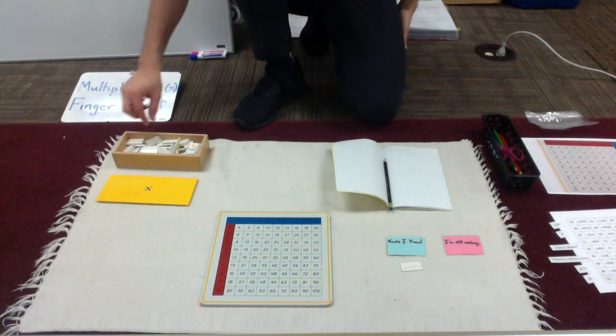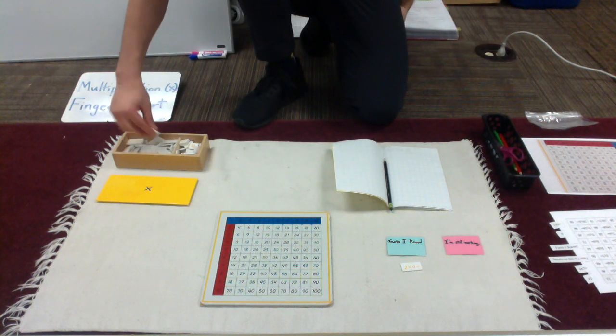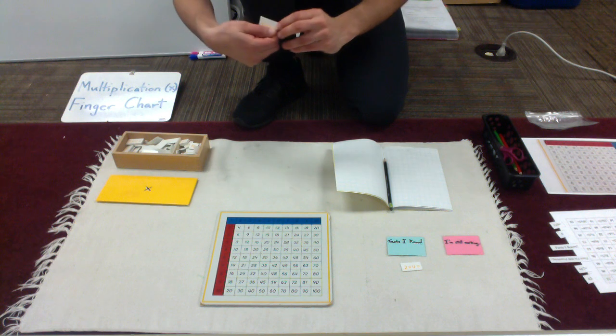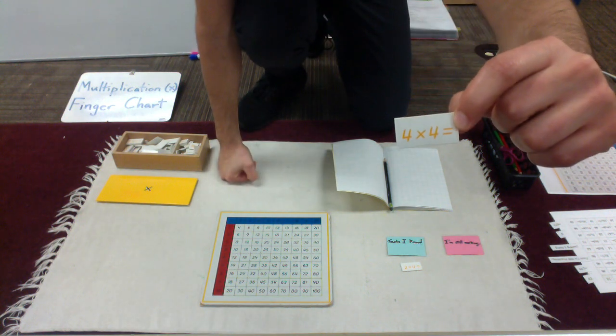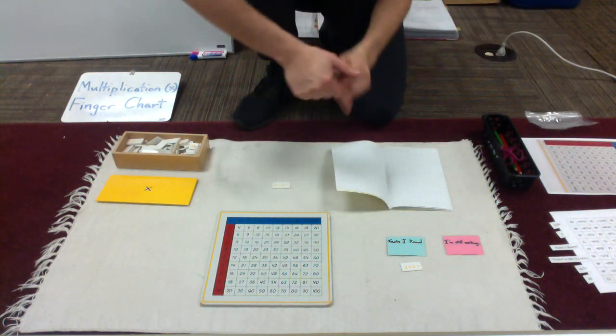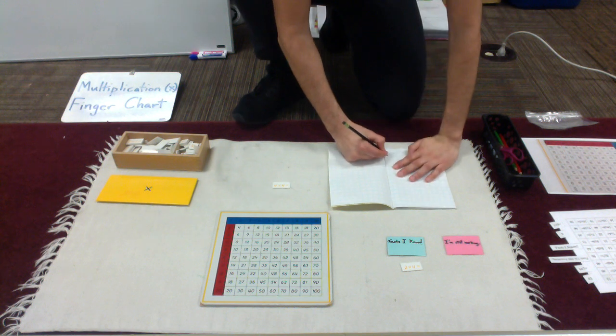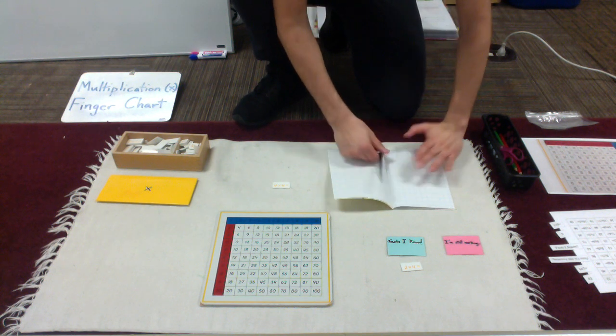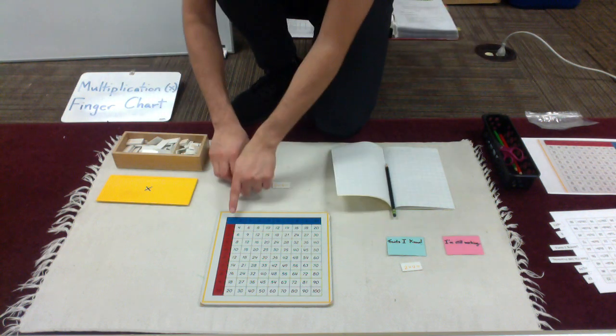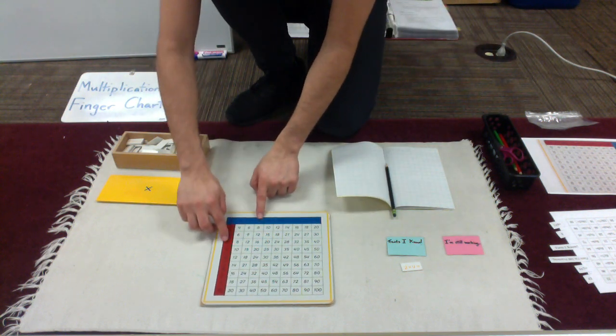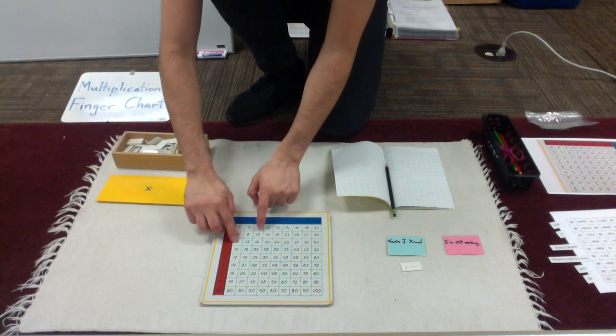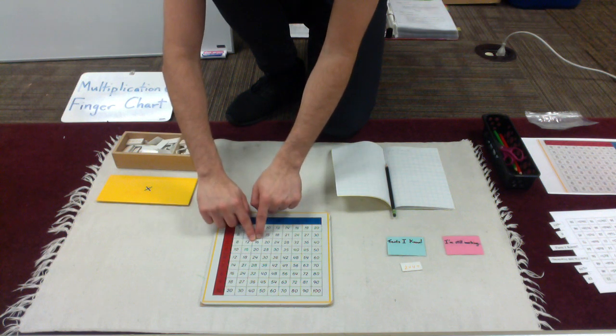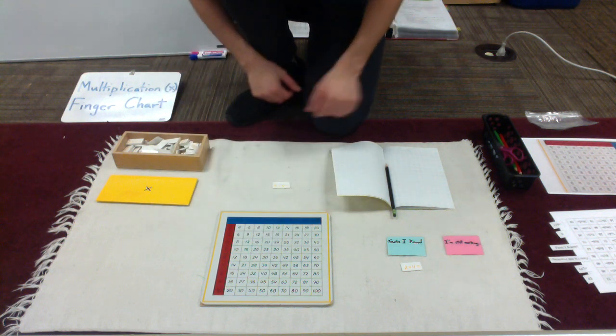So just to demonstrate one more, 4 times 4. The equation 4 times 4 equals. Again, first I will write the equation. 4 times 4 equals. Then I'll use my finger chart. 4, 4. And I will slide.